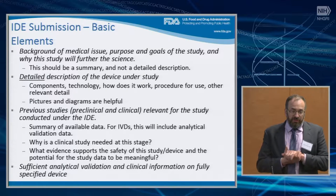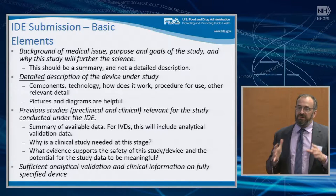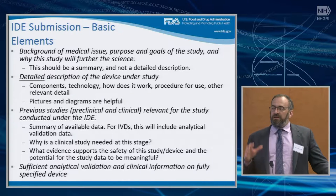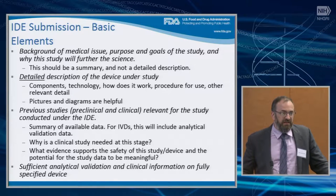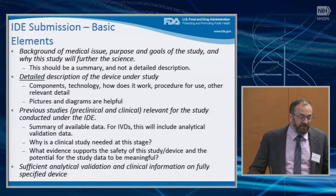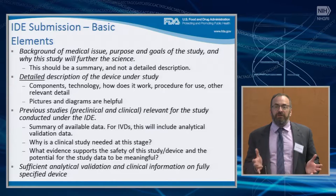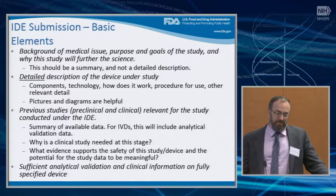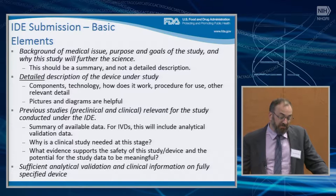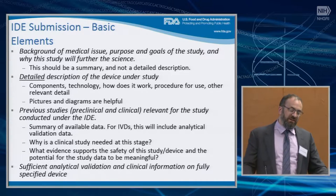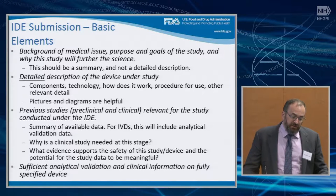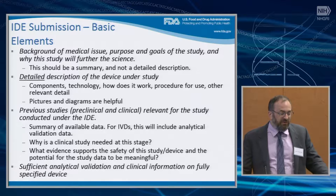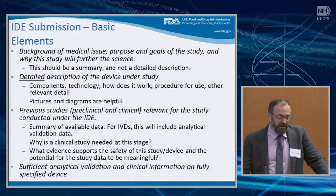I wanted to run through the elements outlined before and give a few tips, because figuring out what information to send to FDA — especially the first time you're doing an IDE, but even later — can be confusing. You do need to describe why you're doing the study, but this is not an R01, so it doesn't need to be a full justification of a hypothesis — more of a summary, like an abstract. We want to know why you're doing the study and what the motivation is. A detailed description of the device under study — we want to know all the components and how it works, and to the degree you can illustrate things in pictures and diagrams, that's very helpful.